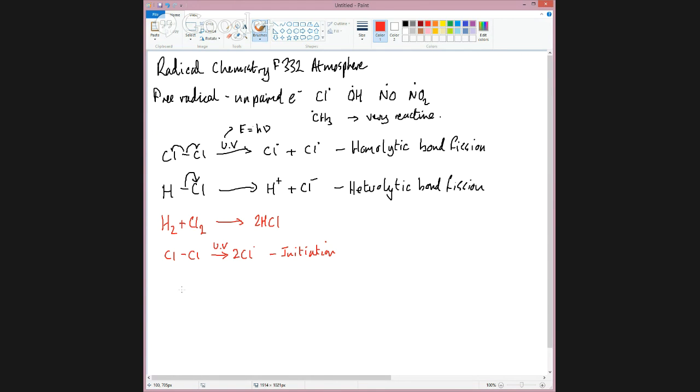It splits the chlorine molecule apart into two chlorine radicals, and that is what we call initiation. So that starts the whole process. Then that chlorine radical that you've got attacks a hydrogen molecule, and what you get is HCl, which is a product molecule, and you get a hydrogen radical in that case.